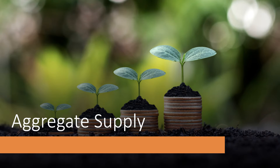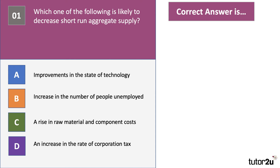Welcome to a quick video looking at six past paper multiple choice questions covering the important topic of aggregate supply. Question number one: which one of the following is likely to decrease short run aggregate supply — which one is going to cause an inward shift of the short run aggregate supply curve? Press pause, have a go, then press play and we'll walk through the answer together.